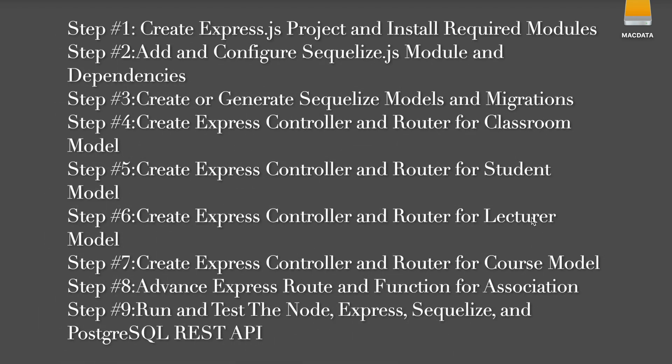This tutorial is divided into several steps. Step 1: create an Express.js project and install required modules. Step 2: add and configure the Sequelize.js module and dependencies. Step 3: create or generate Sequelize models and migrations. Step 4: create Express controller and router for the classroom model. Step 5: for the student model. Step 6: for the lecturer model. Step 7: for the course model. Step 8: advanced Express routes and functions for associations. Step 9: run and test the Node/Express/Sequelize/PostgreSQL REST API.